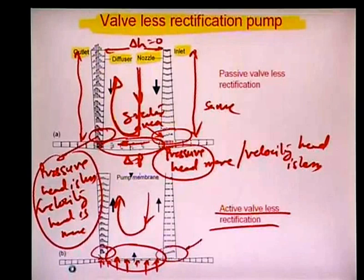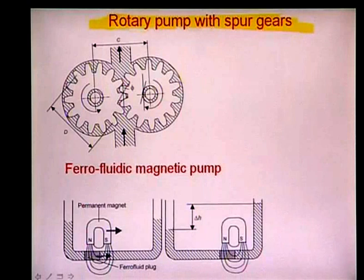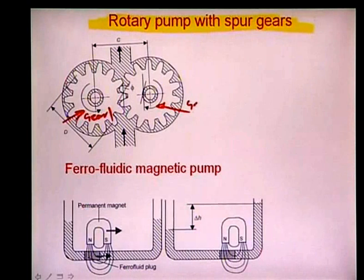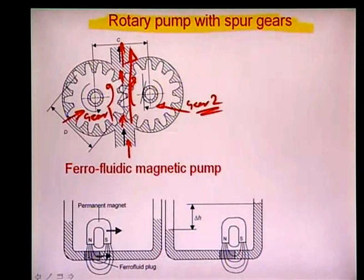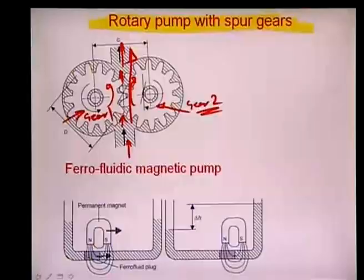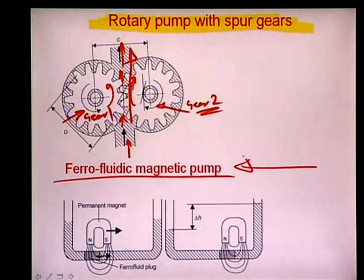Other pumping systems include rotary pumps with spur gears. Two meshing gears — one moving anticlockwise and one clockwise — push material inside the micro channel forward. This type is also used for relatively high-viscosity fluids. Here is another illustration of a ferrofluidic magnetic micropump, where a plug of ferrofluid (oil immersing ferrous nanoparticles) moves as a plug.